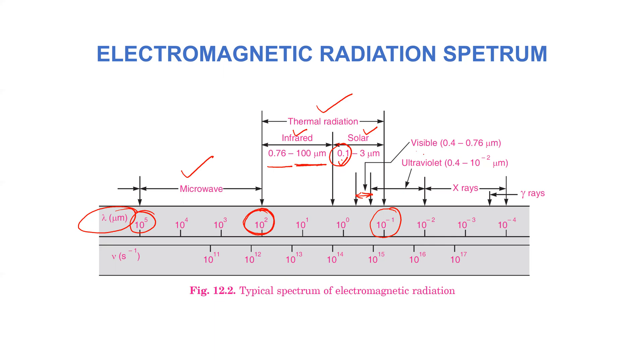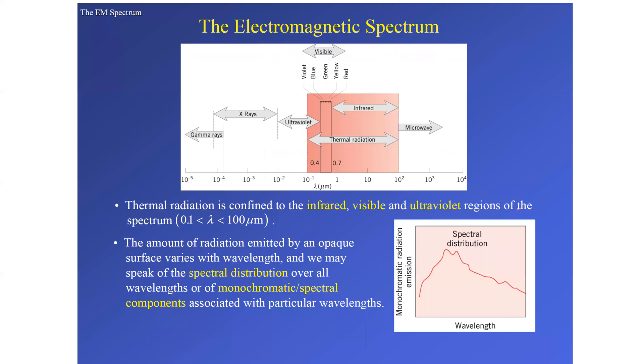It is a part of the solar radiation and this varies between 0.4 to 0.76 micrometers or microns. Then we have ultraviolet radiations. It varies between 0.4 to 10 raised to power minus 2 micrometer. Then we have the x-rays varying between 10 raised to power minus 2 to 10 raised to power minus 4.